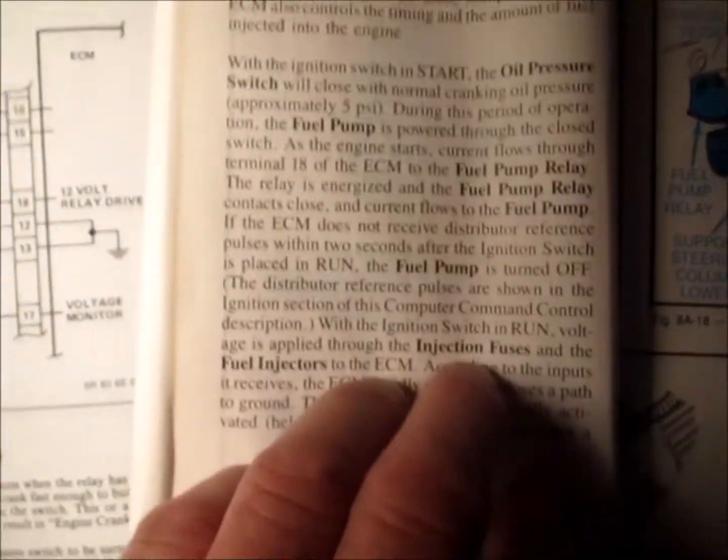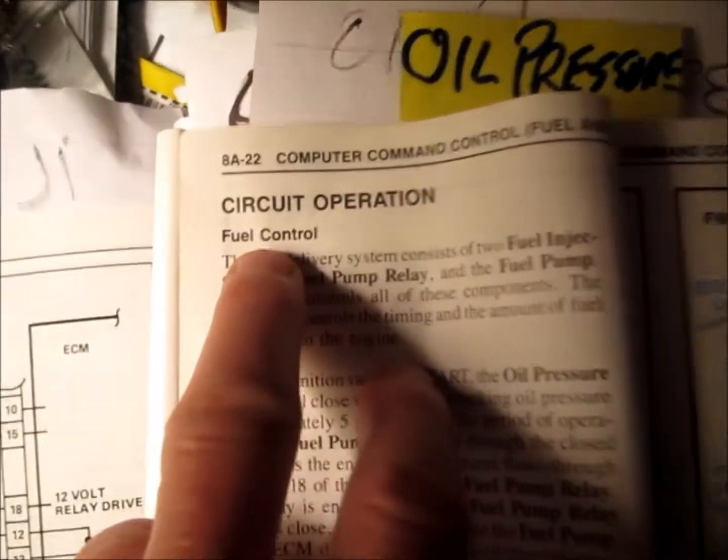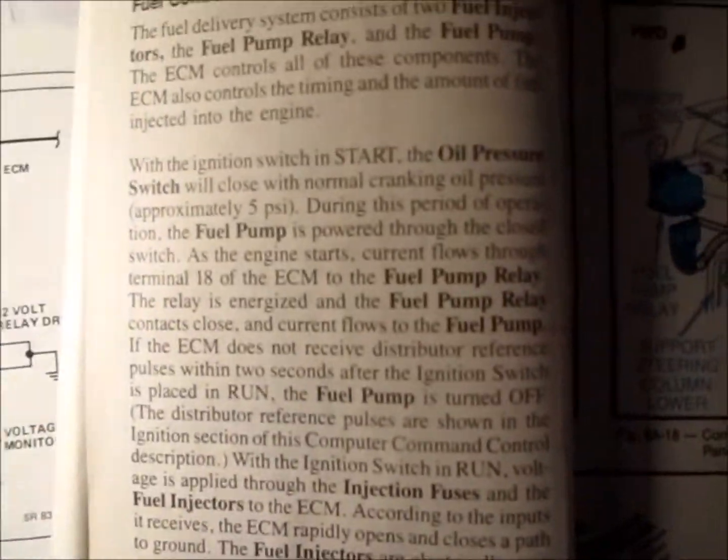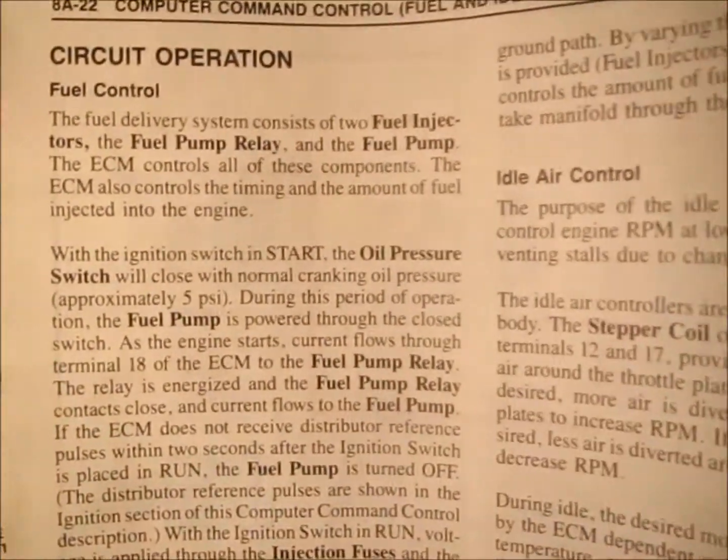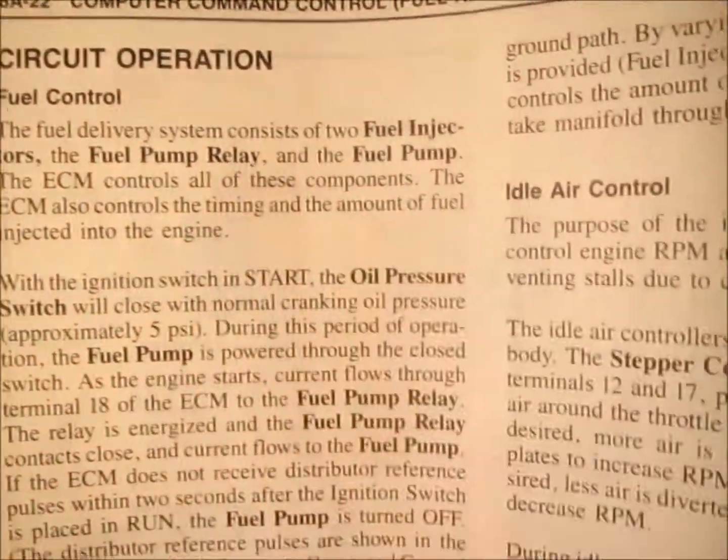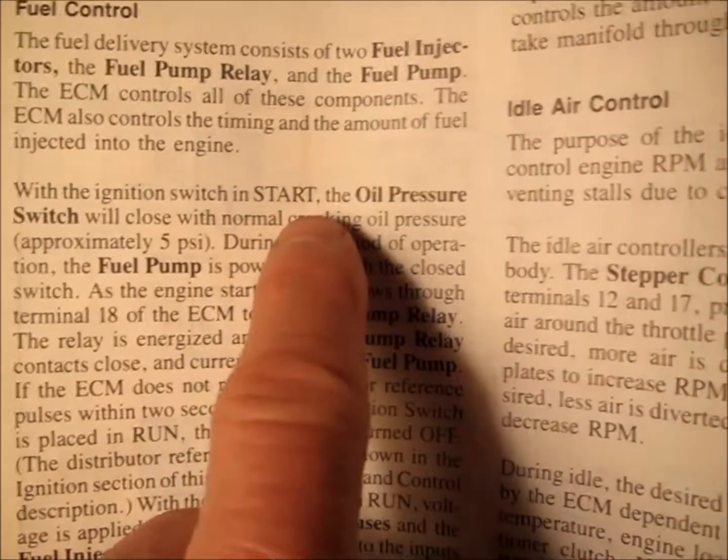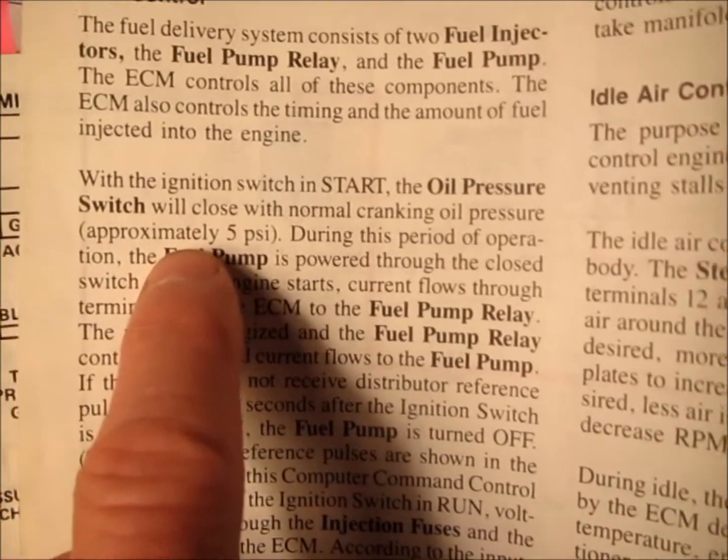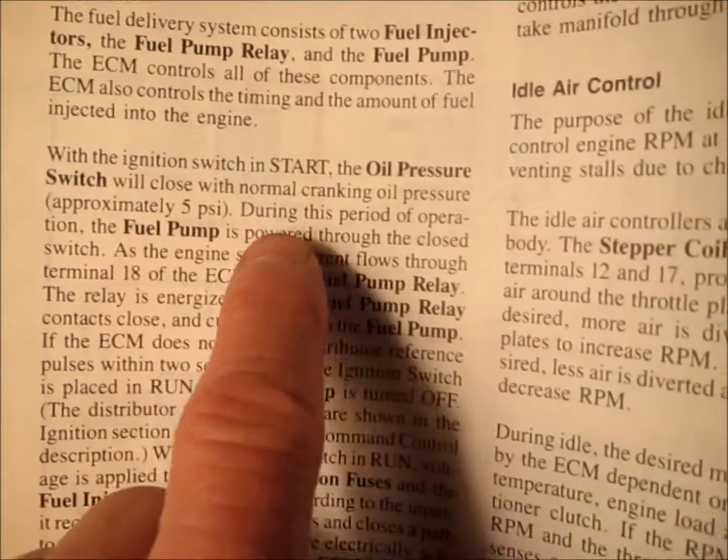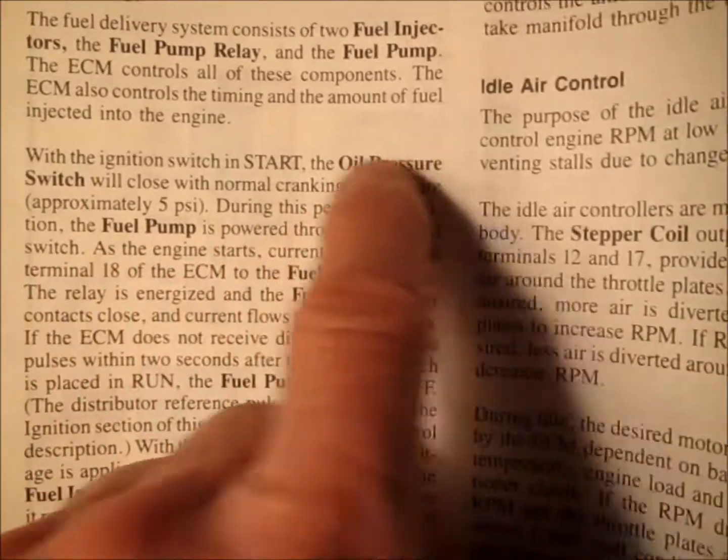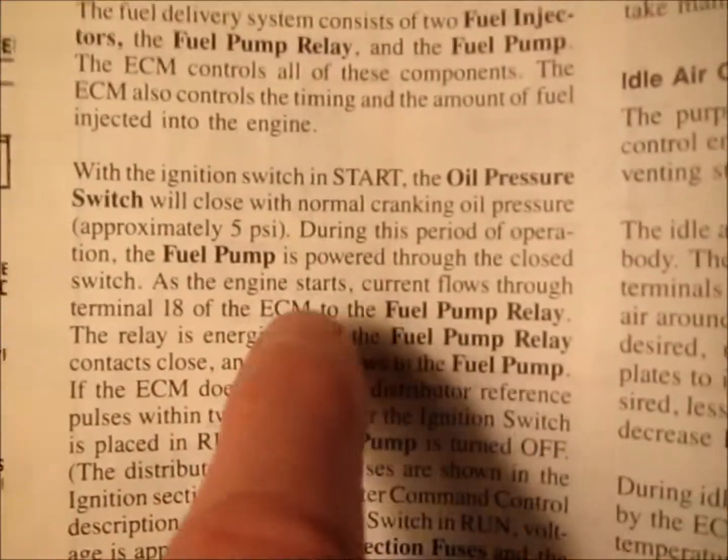The way the fuel control works, the fuel delivery system consists of two fuel injectors, the fuel pump relay, and the fuel pump. The ECM controls all of these components. With the ignition switch in start, the oil pressure switch will close with normal cranking oil pressure, and here they're saying 5 PSI. During this period of operation, the fuel pump is powered through the closed oil pressure switch.